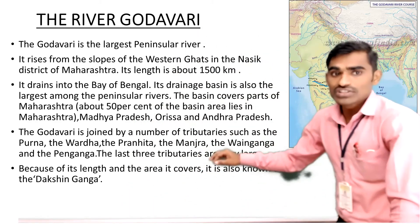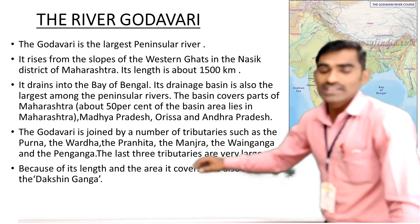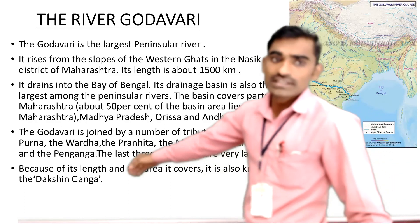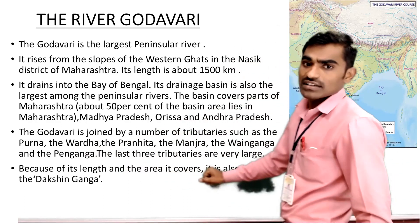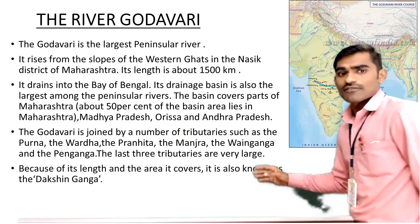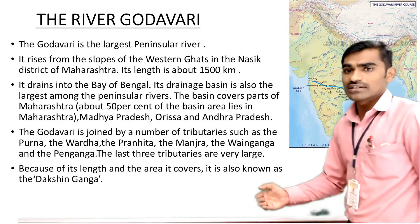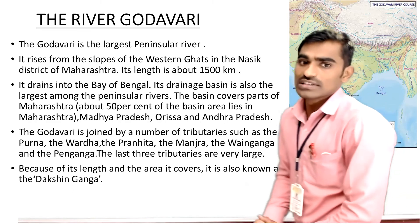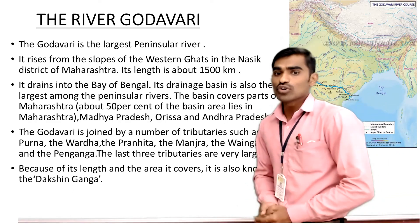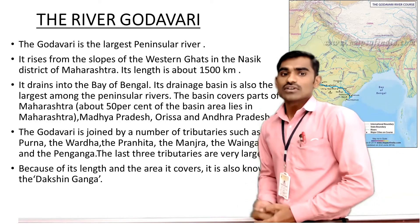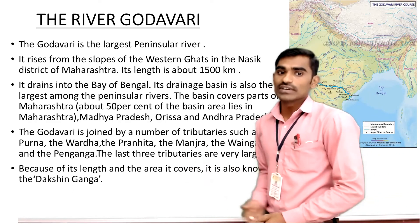Some of the very important tributaries you can see here on the screen: these are Purna, Varda, Pranahita, Mantra, Vainaganda, and Penaganda. All these are some of the important tributaries of the Godavari River.